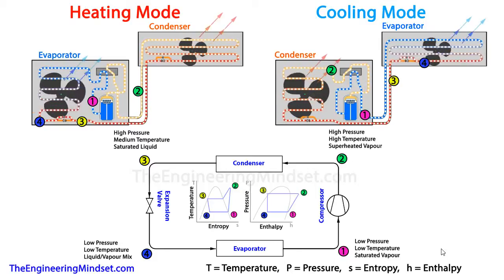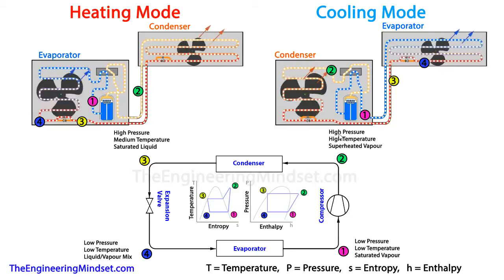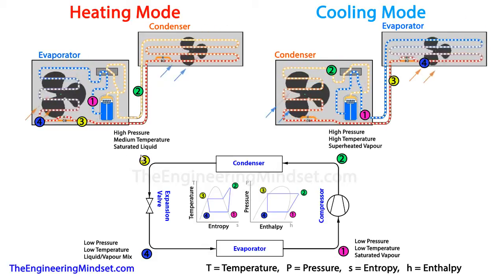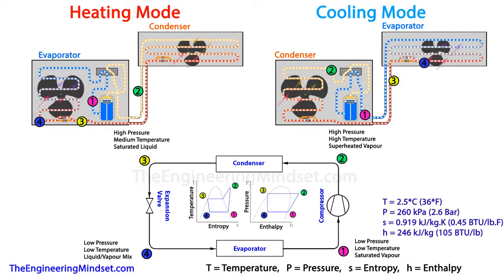Now we can see all the points and what stages the refrigerant goes through. At Point 1 the refrigerant is a low-pressure, low-temperature saturated vapor. At Point 2 it is a high-pressure, high-temperature superheated vapor. At Point 3 it is a high-pressure, medium-temperature saturated liquid. At Point 4 it is a low-pressure, low-temperature liquid-vapor mix, which then makes its way back to Point 1.